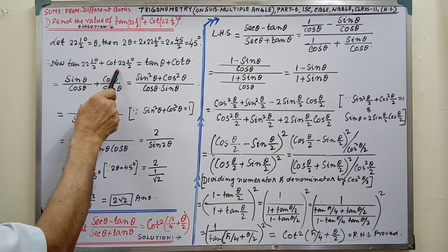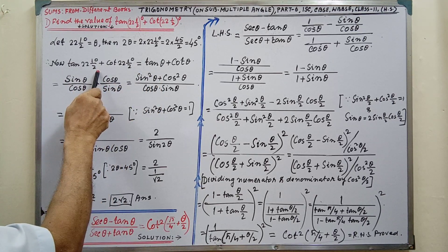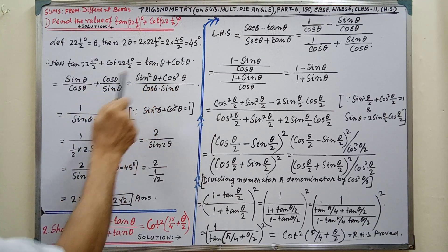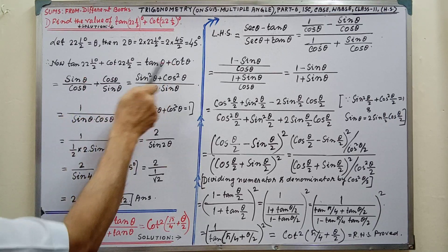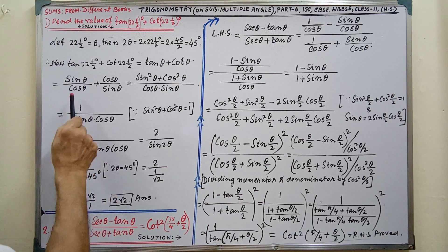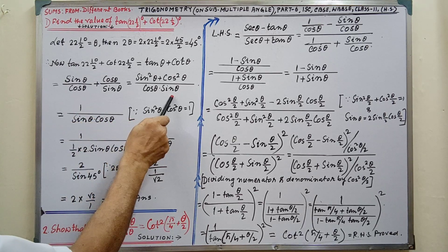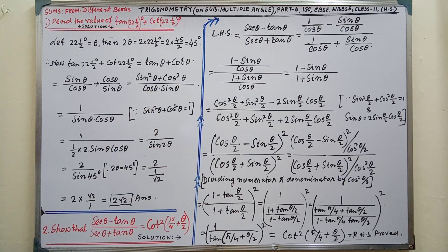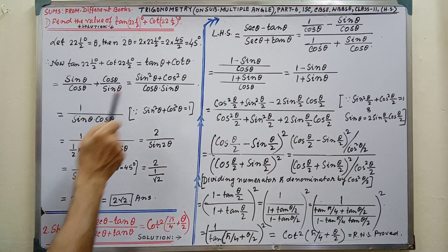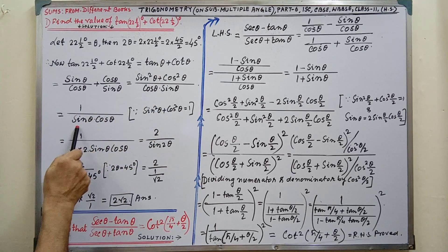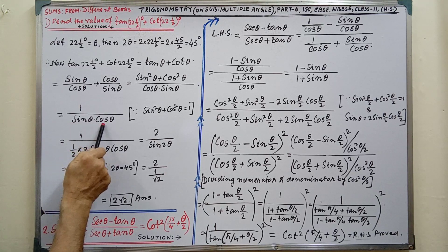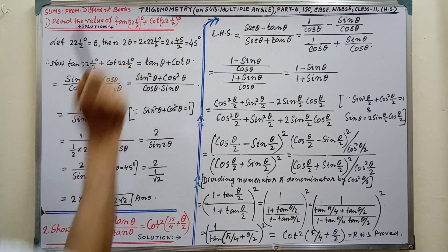Now, after writing the sum, we have to put theta in place of 22 and half. Then we have to simplify: tan theta is sin theta by cos theta, and cot theta is cos theta by sin theta — that you have learned in class 9. By simplifying, we get sin squared theta plus cos squared theta in the numerator. Since sin squared theta plus cos squared theta equals 1, we write 1 and sin theta by cos theta.